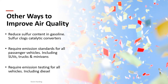Beyond electrostatic precipitators and scrubbers, there are other ways to improve air quality. Reducing sulfur content in petrol is one approach — high sulfur content can clog catalytic converters in modern cars, which are designed to reduce air pollution. If the petrol already has sulfur, it pollutes the air directly and also prevents the catalytic converter from doing its job.